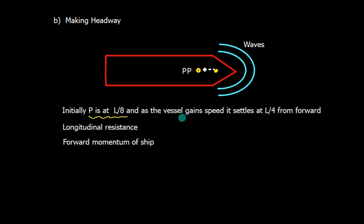And as the vessel gains speed or momentum, it settles around L by 4. So this distance is L by 4. The shifting of pivot point takes place because of the longitudinal resistance and the forward momentum of ship.